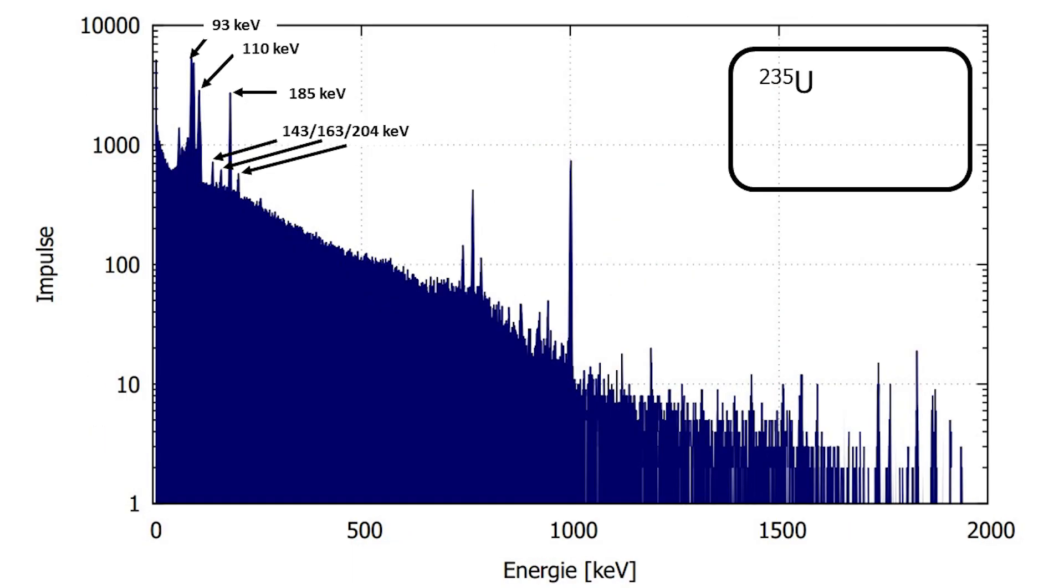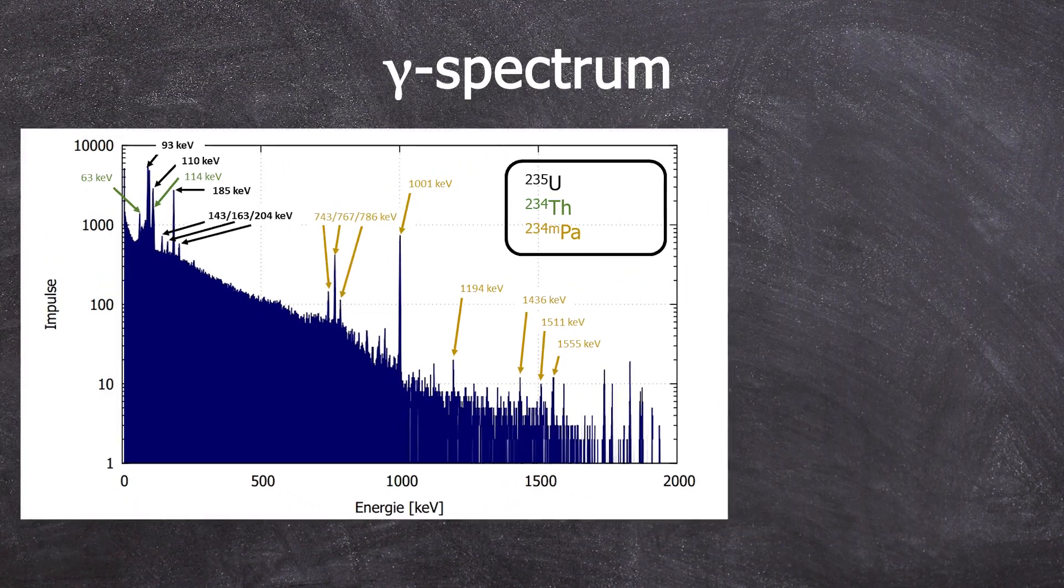Okay, back to the gamma spectrum. It's clear that natural uranium from which the pellets are made of contains a 0.7% fraction of uranium-235, which is why you can see it in the gamma spectrum. Uranium-238 itself does not have any noticeable gamma lines.